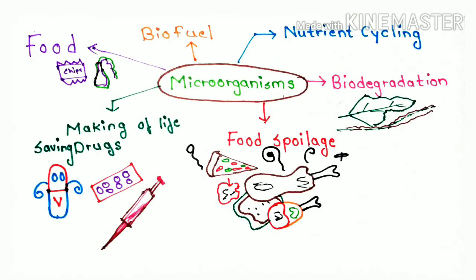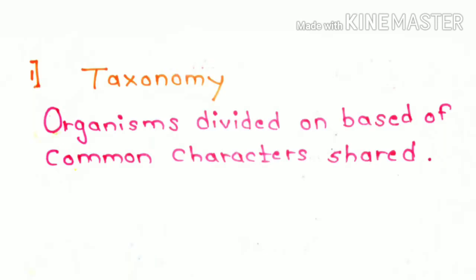As the microorganisms are part of vast processes happening on the earth, it gives rise to many branches of microbiology. First, we will look by taxonomy. Taxonomy is a branch of science that is concerned with defining biological organism based on characteristics shared.